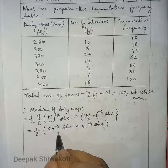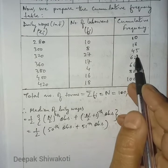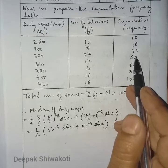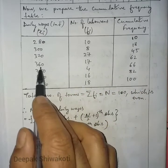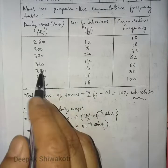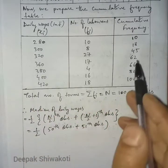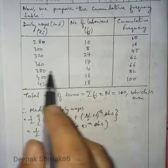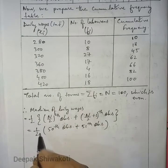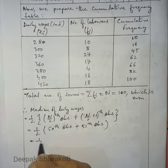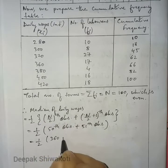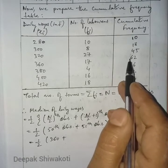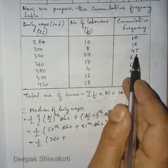To find the 50th observation: looking at the cumulative frequency, up to 320 the cumulative frequency is 45, and up to 360 it is 62. So the 50th observation lies between positions 46 and 62, which corresponds to a wage of 360 rupees.